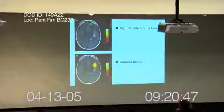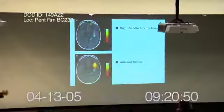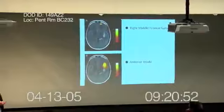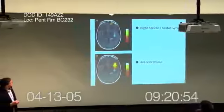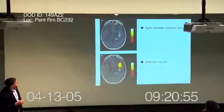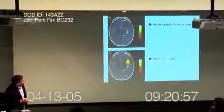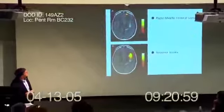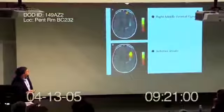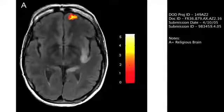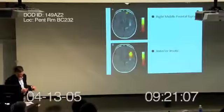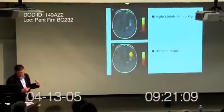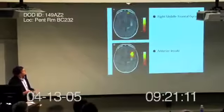In each case, these individuals were read a religious text. The high-VMAT2 individual lit up the right middle frontal gyrus, shown here, and that's a part of the brain associated with theory of mind — a part of the brain that has to do with intents, beliefs, and desires.